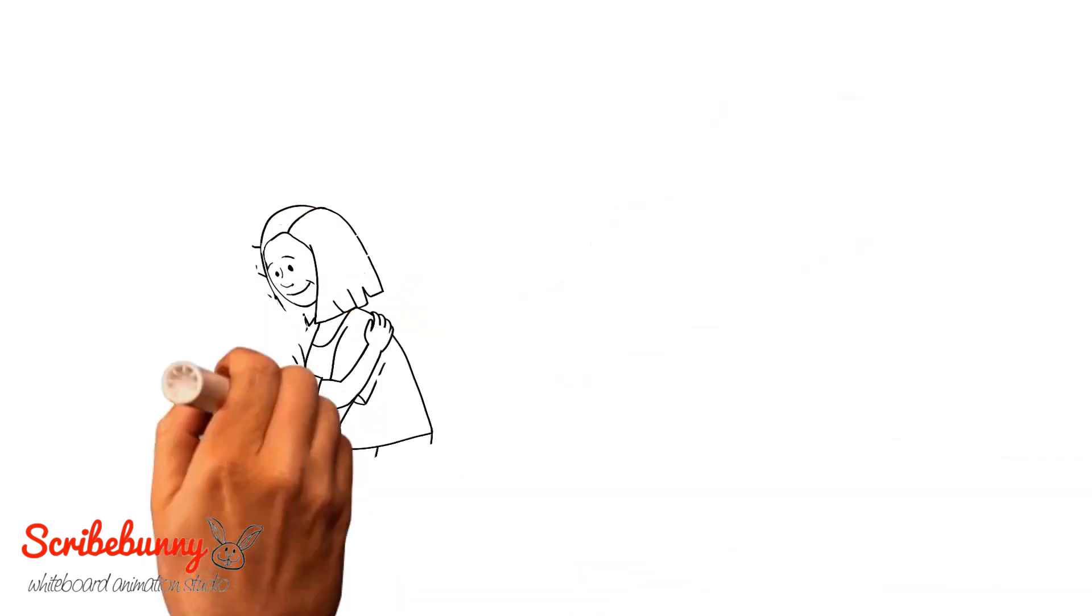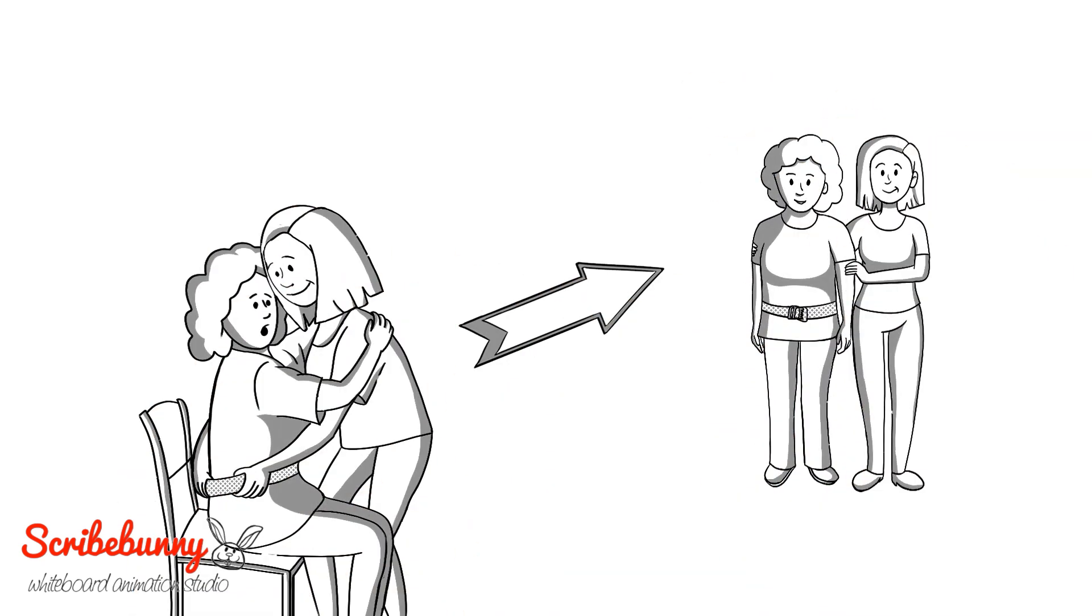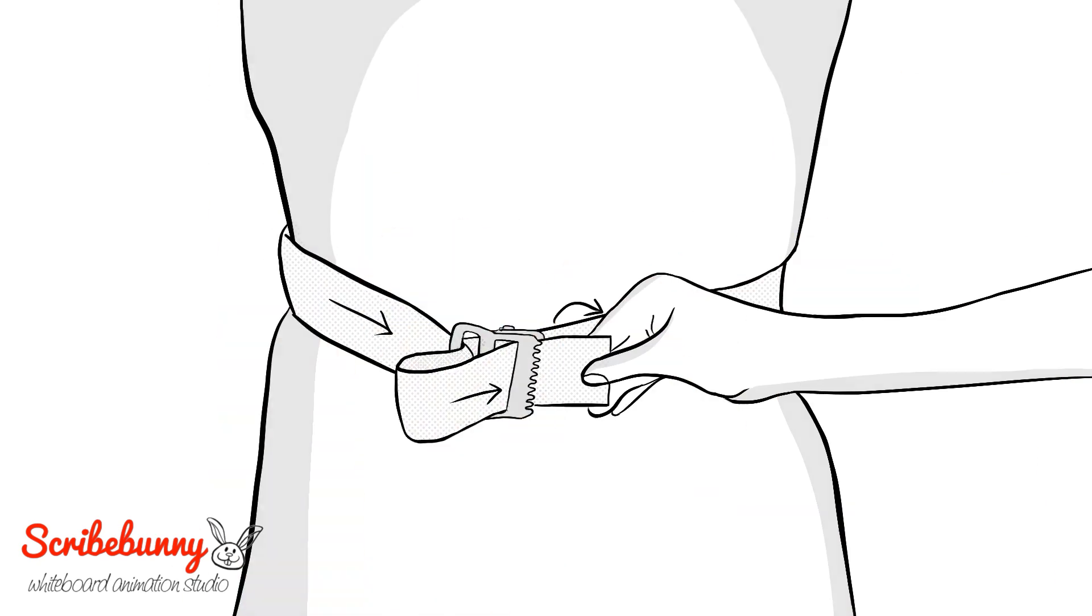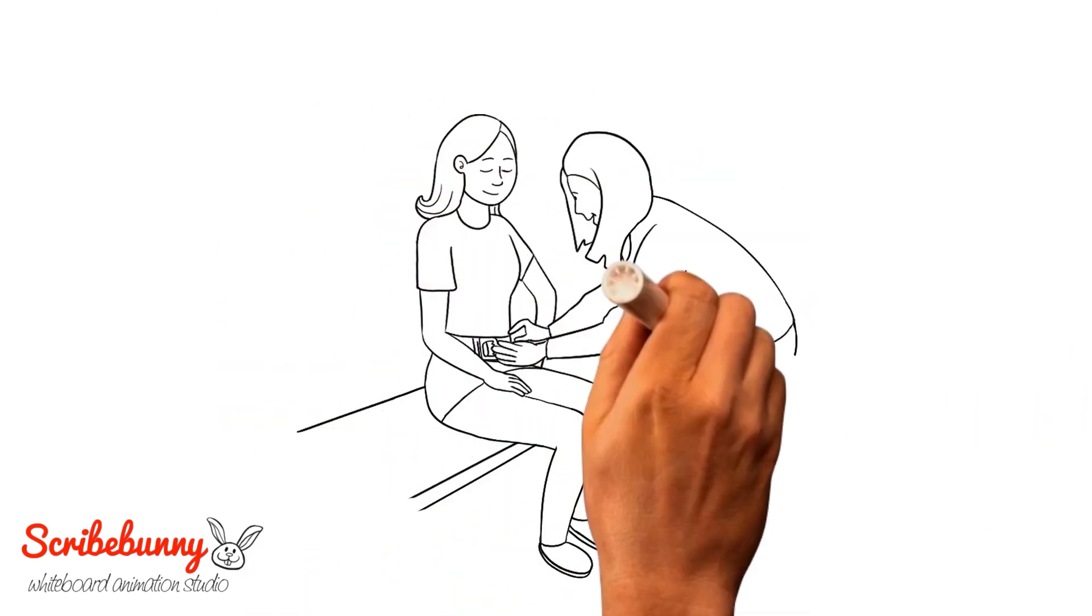A gait belt is a special device to lift and transfer patients with mobility issues safely by passing it through the buckle to fasten. Place the buckle slightly off-center for comfort.